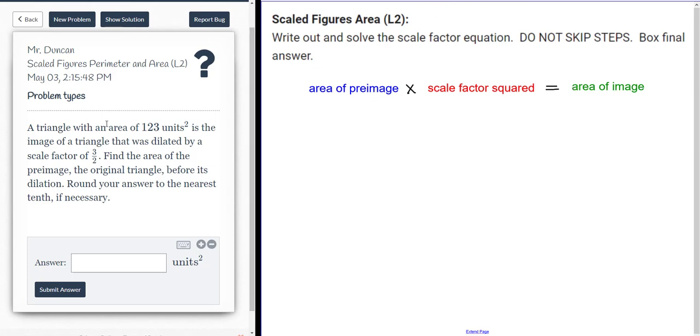All right, let's see. It says a triangle with an area of 123 units squared is the image of the triangle. I'm going to stop right there. And I'm going to take that value. That's actually going to go over here on the right side of the equation because it's stated right here. This is the image of the triangle. And on the right side, we're looking for the area of the image. So in goes 123 for that.